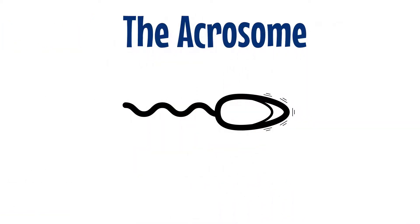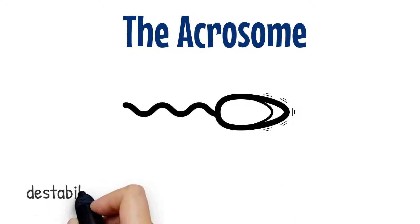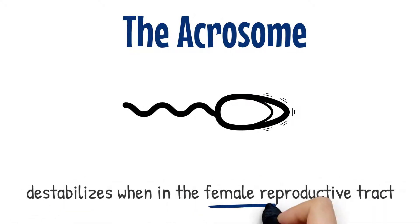When in the reproductive tract, sperm undergo a process called capacitation, where the acrosomal membrane, or the outer layer of the acrosome, is destabilized.